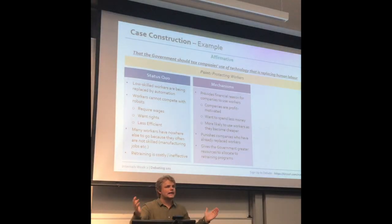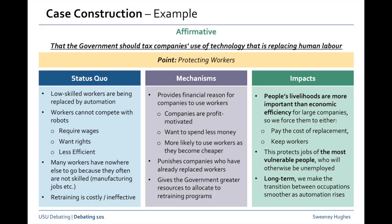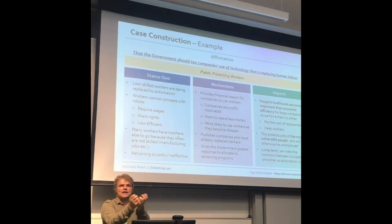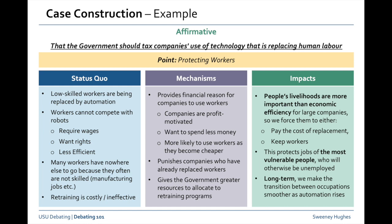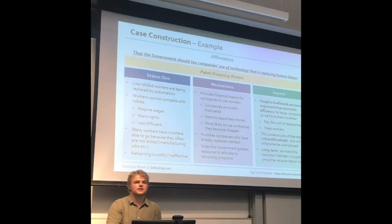Your mechanism is the model you've implemented — that the model provides a financial incentive for companies to use workers because those companies are profit-oriented, it punishes those that have replaced workers, and because you're implementing a tax it gives the government far more resources to allocate to retraining programs. The impact of those changes: people's livelihoods are more important than the economic efficiency you might get. You protect jobs of the most vulnerable people being widely displaced by mechanical work, and long term you make the transition between occupations better since you now have more capital to allocate to retraining workers.